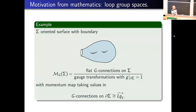A typical example: for a surface with boundary, you look at flat connections on the surface with boundary up to gauge transformations which are trivial along the boundary, and the moment map is just pulling back such a connection to the boundary.